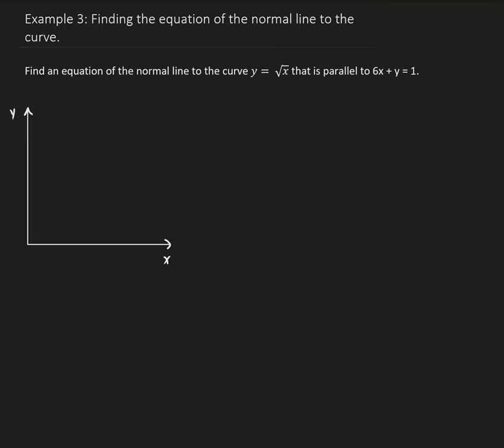In this example, we want to find an equation of the normal line to the curve y equals square root of x that is parallel to the line 6x plus y equals 1. So to understand what this problem is asking for, let's first get a basic understanding of what is given.